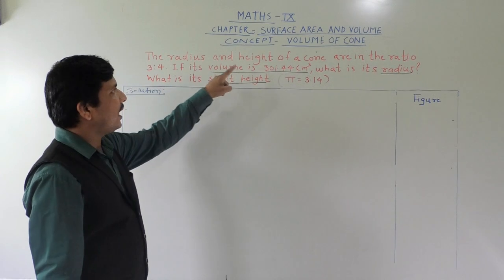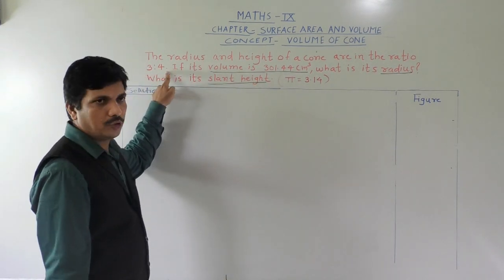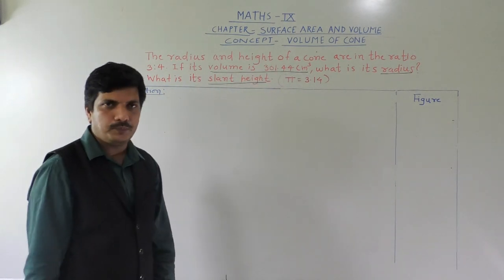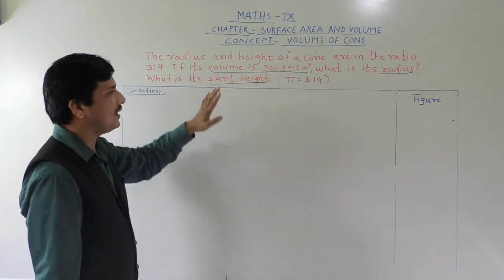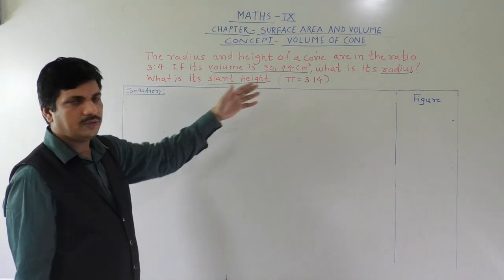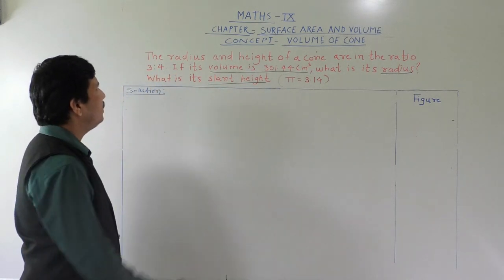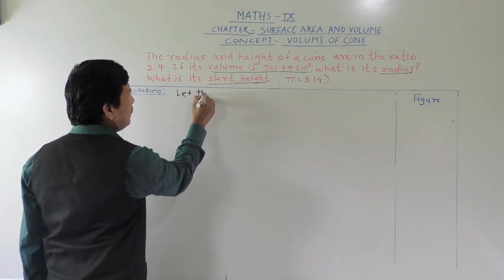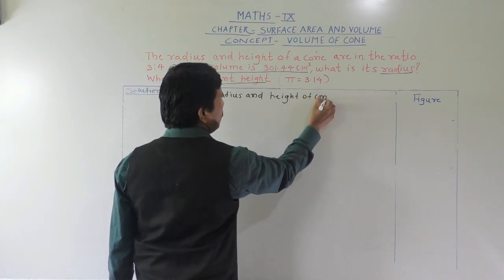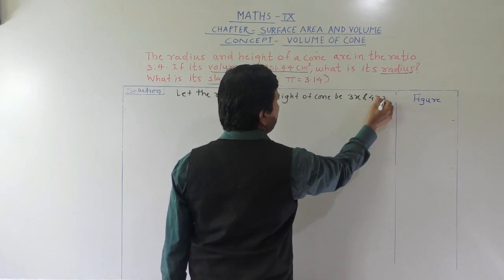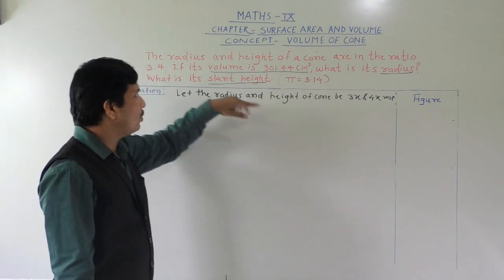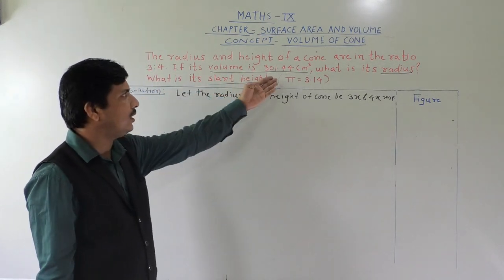Our second problem: the radius and height of a cone are in the ratio 3 is to 4. If its volume is 301.44 centimeter cube, find its radius and slant height. We need to find two things: radius and slant height. Without radius we cannot find slant height. So first, let the radius and height of cone be 3x and 4x respectively.